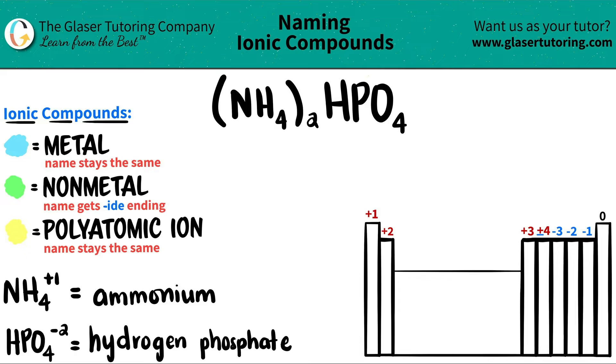Now, you might notice this one. Ammonium is usually used a lot of the time. So NH4, which is always a plus one charge, is always called ammonium. And it's right here, NH4.